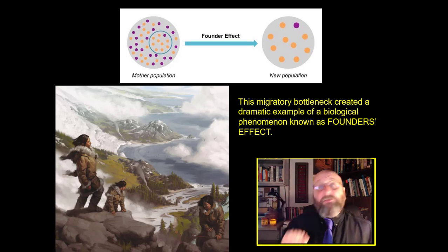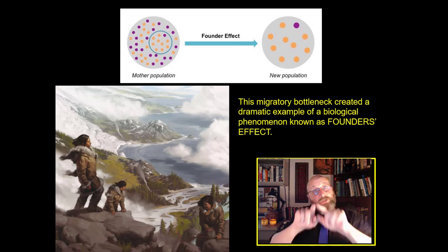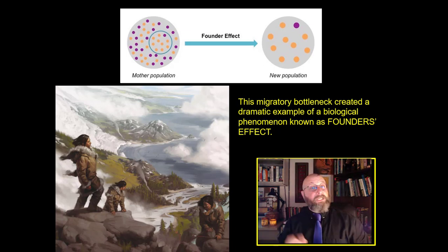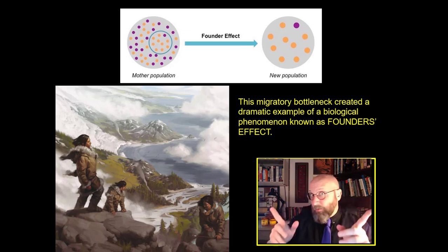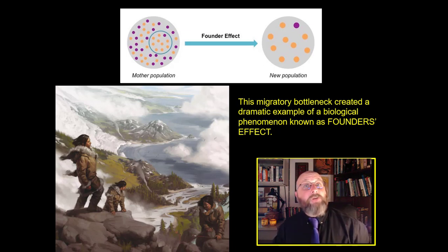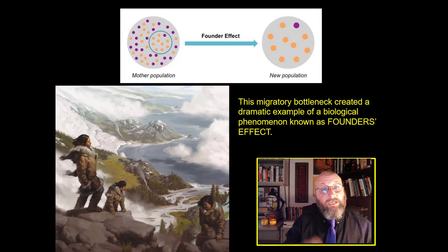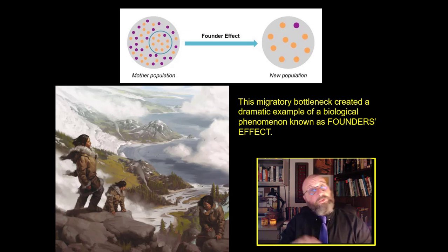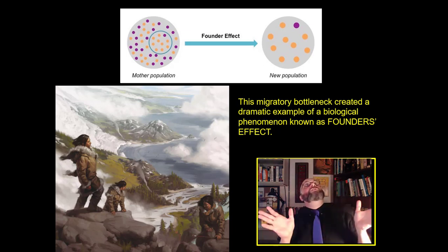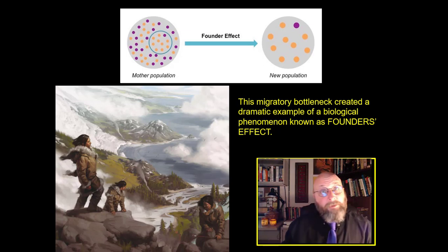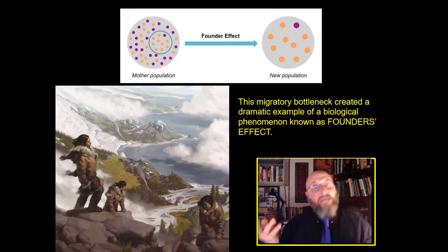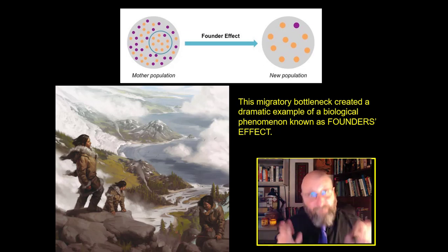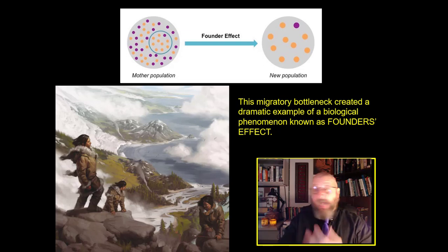Founder's Effect is the biological phenomenon where the genetic diversity of a population is limited to the genetic diversity of the founders. The dot example illustrates this: if a mother population is evenly divided between purple and yellow-orange dots, but the colonizing founders consist mostly of yellow-orange dots, then in the new population you won't have many purple dots — almost entirely yellow-orange.